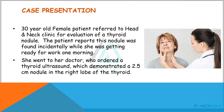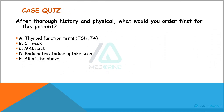Let's start with a case presentation to guide us in our discussion. A 30-year-old female patient is referred to a head and neck clinic for evaluation of a thyroid nodule. The patient reports this nodule was found incidentally while she was getting ready for work one morning. She went to a primary care practitioner who ordered a thyroid ultrasound that demonstrated a 2.5 cm nodule in the right lobe of the thyroid. After doing a history and physical examination on this patient, what do you consider first for this patient?